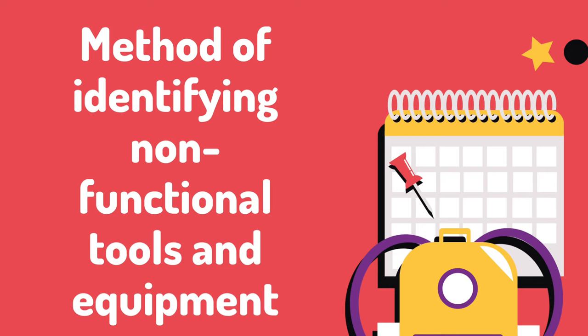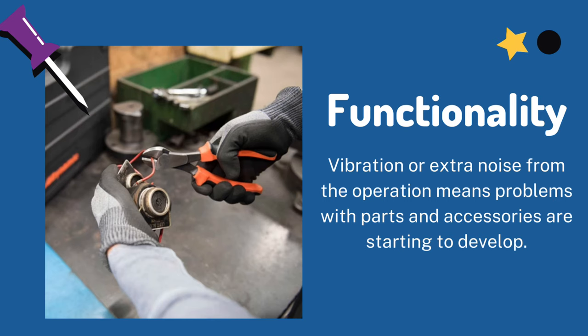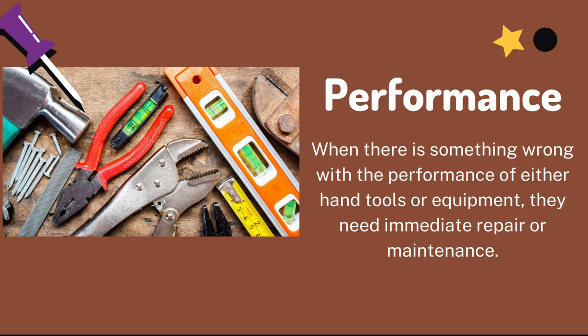Now let's discuss the methods of identifying non-functional tools and equipment. The first method is visual inspection, which refers to the visual observation by an expert on the appearance of the tools and equipment. Next is functionality — vibration or extra noise during operation means problems with parts and accessories are starting to develop. Next, we check the power supply, as failure to meet the required power supply will result in a malfunction. We also need to check the performance; when there is something wrong, tools or equipment need immediate repair or maintenance.